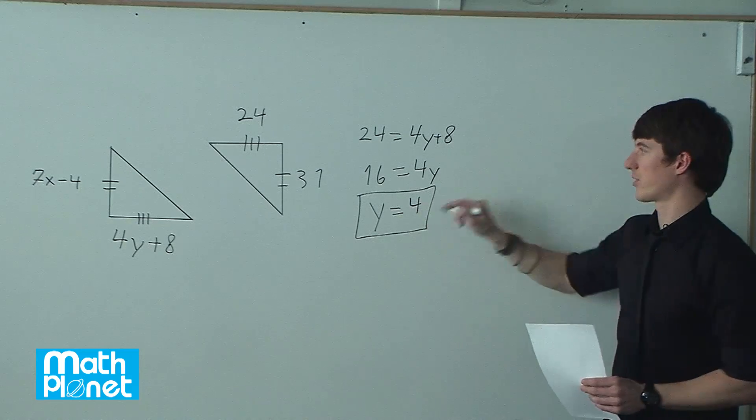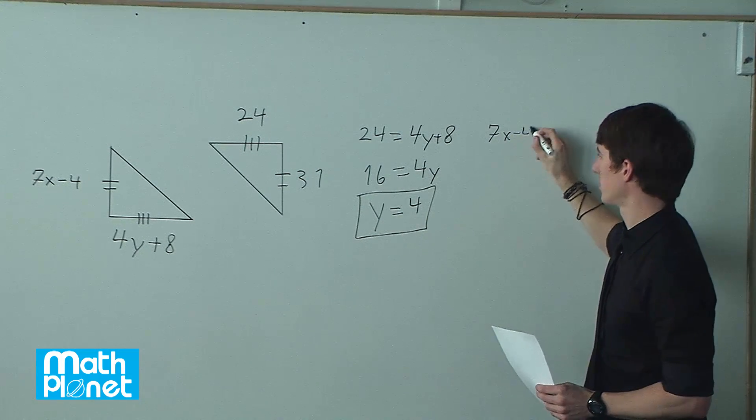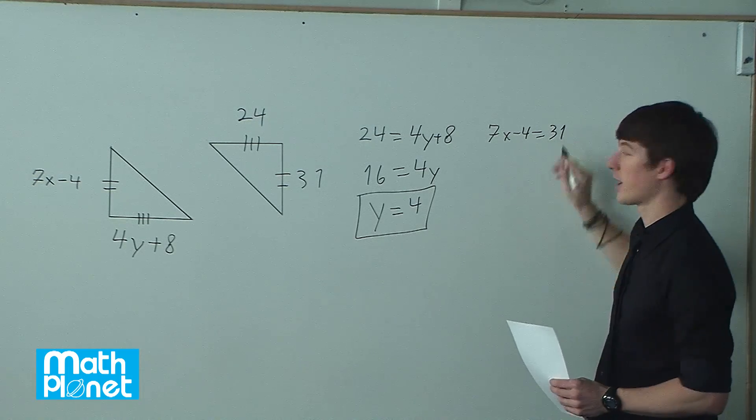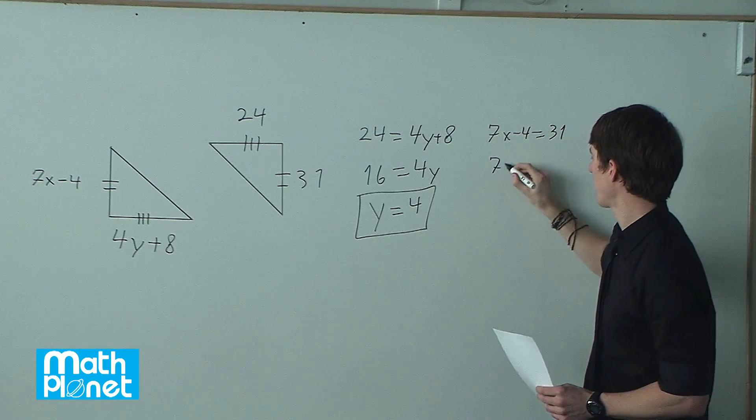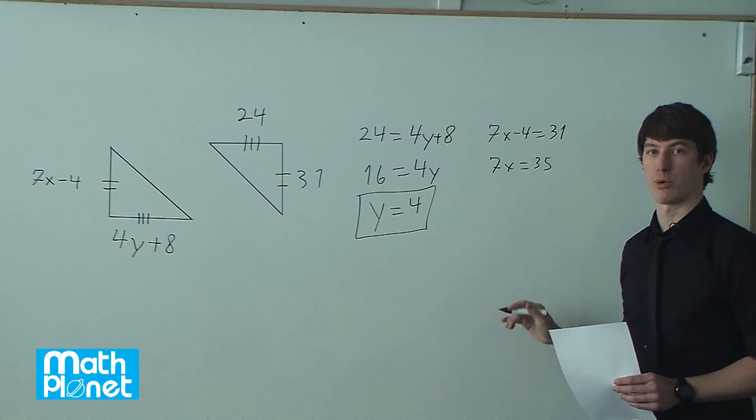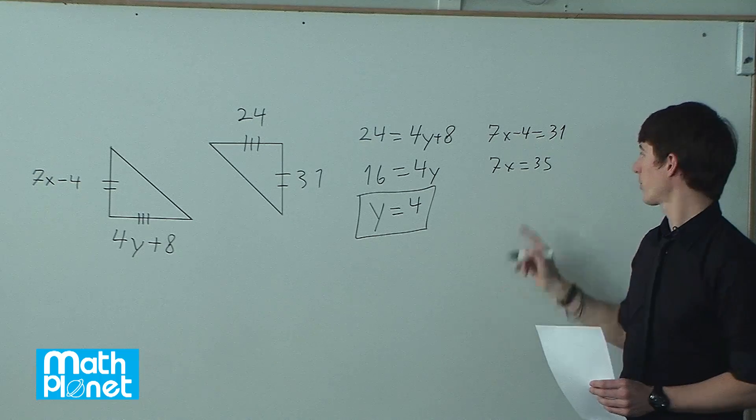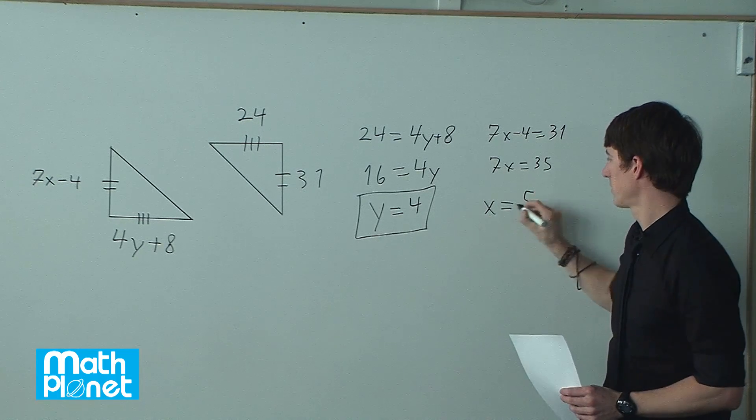And then we can do the same thing here. 7x minus 4 equals 31, and then we can solve for x. We add 4 to both sides, we have 7x equals 35, and then we divide both sides by 7, and we get 35 over 7, which is 5, so x equals 5.